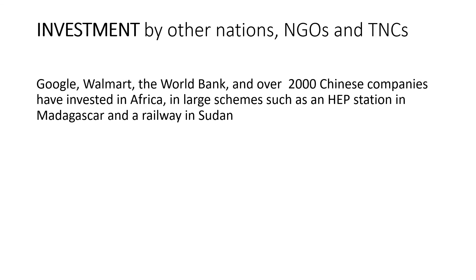The final strategy is investment, which really links to industrial development. Investment by other nations, non-governmental organisations, and transnational companies can obviously help improve areas a lot. Google, Walmart, the World Bank, and over 2,000 Chinese companies have all invested in Africa in large schemes such as hydroelectric power stations to provide energy in Madagascar, and a railway in Sudan. These are some of the wealthiest companies in the world, investing in large projects to better the lives of the poor.